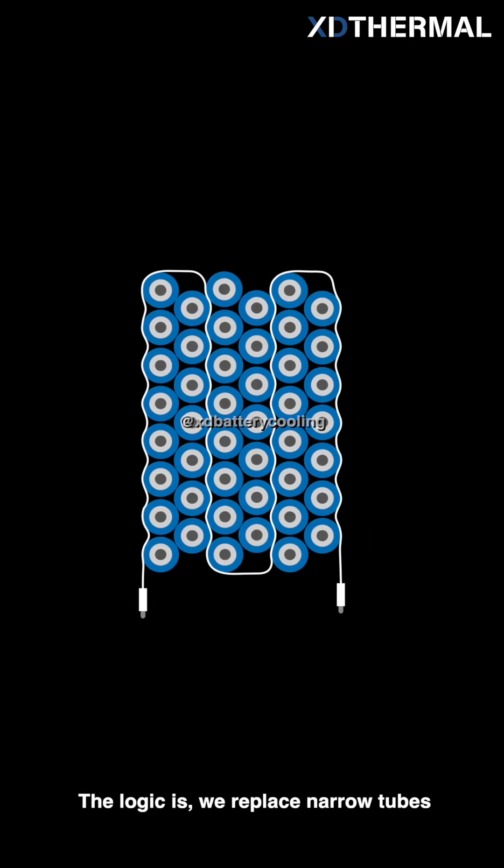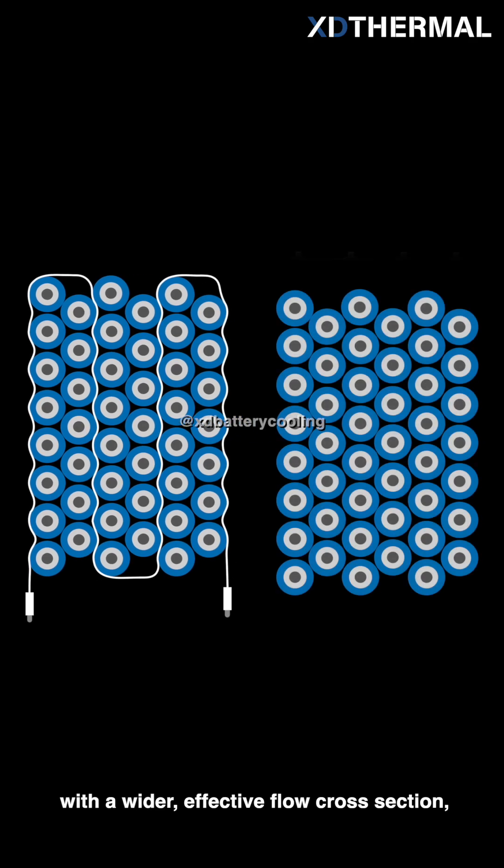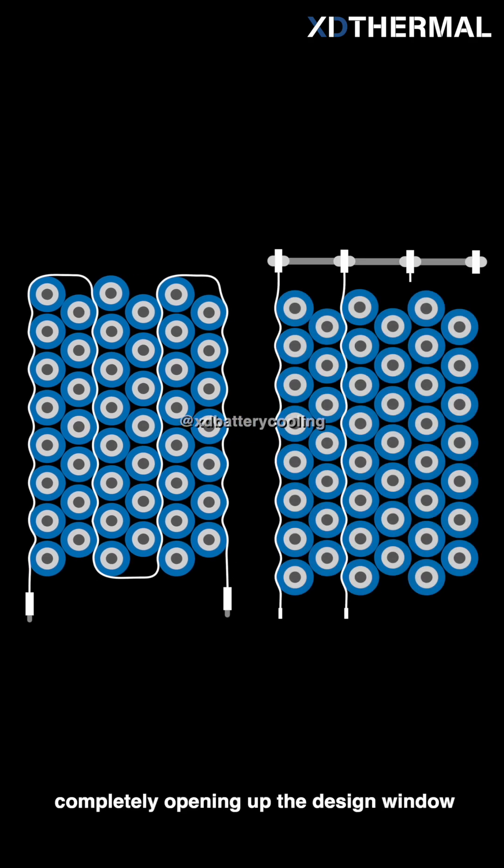The logic is, we replace narrow tubes with a wider, effective flow cross section, completely opening up the design window for pressure drop.